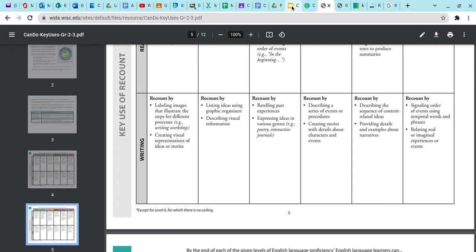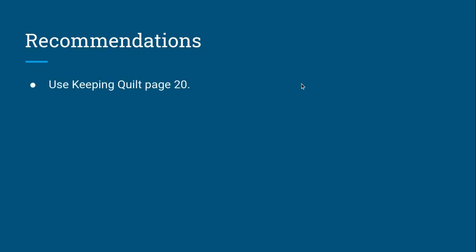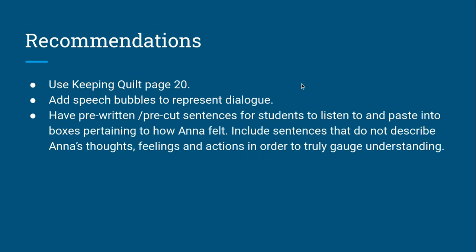Jumping back into the presentation: we want to use the actual text, since the assessment requires evidence from it. Instead of just having the keeping quilt page 20 printed out in an abstract way, we're going to put speech bubbles on the page to represent dialogue. We'll have pre-written and pre-cut sentences for students to listen to and paste into speech bubbles pertaining to how Anna felt. Importantly, we should include some sentences that do NOT describe Anna's thoughts, feelings, and actions, in order to truly gauge understanding.